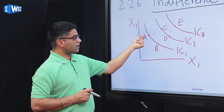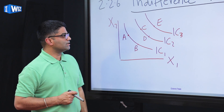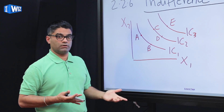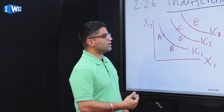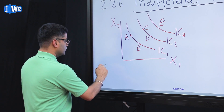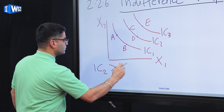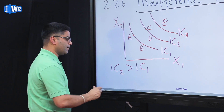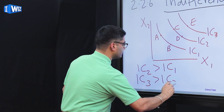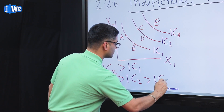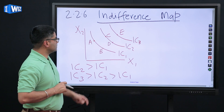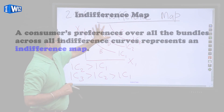So these are bundles — bundle A, bundle B, bundle C, D, E — and this whole representation across all these bundles on one line is an indifference curve. An indifference map lets us relate how we have our preferences across these indifference curves. We know that indifference curve 2 is preferable to indifference curve 1, and indifference curve 3 is preferable to indifference curve 2, which by default is preferable to indifference curve 1. So now we can rank these preferences across all the bundles across this whole space.